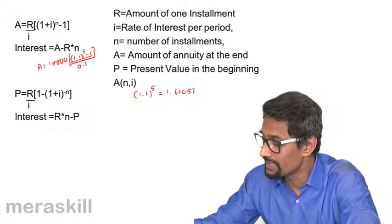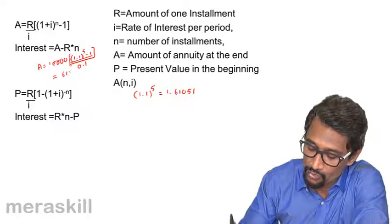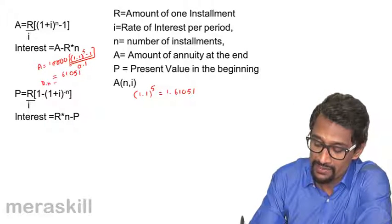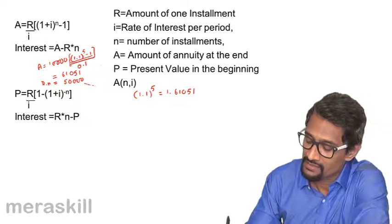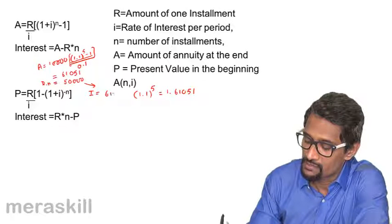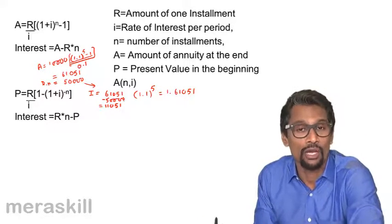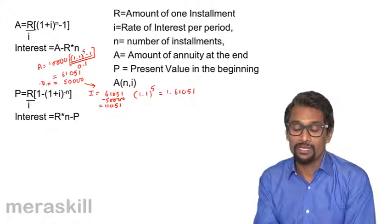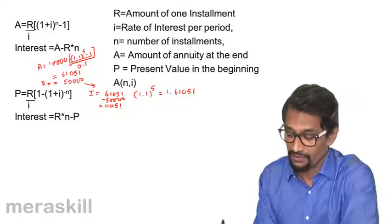0.61051 into 10,000 gives 6,105.1. Divide by 0.1 and the future value is 61,051. R into n is 10,000 into 5, which is 50,000. So the interest is 61,051 minus 50,000, which equals 11,051 — that is the interest you are getting for this deposit of 50,000, made as five deposits of 10,000 rupees.